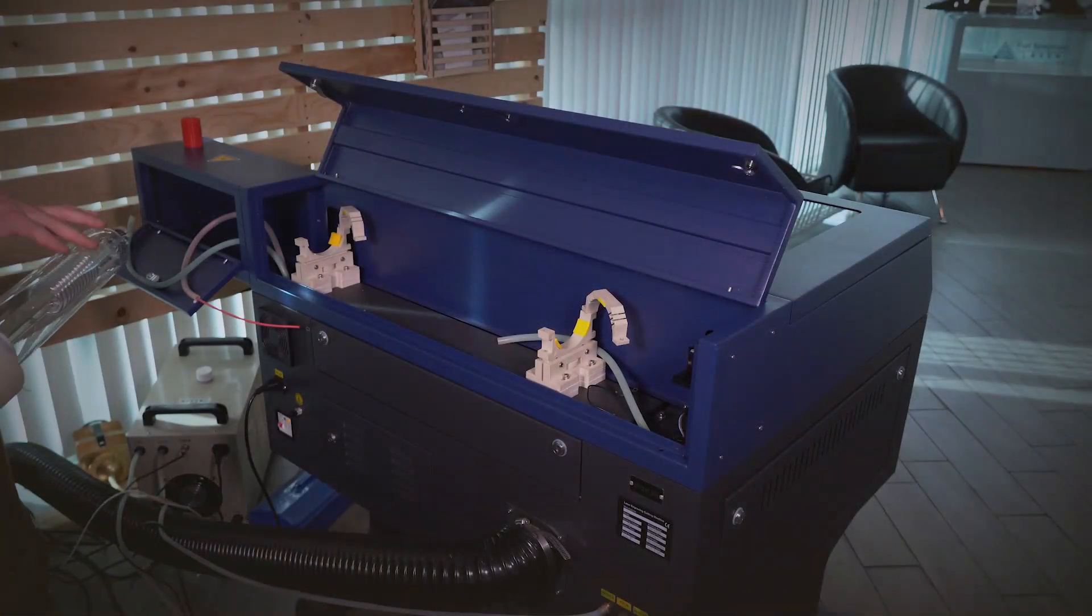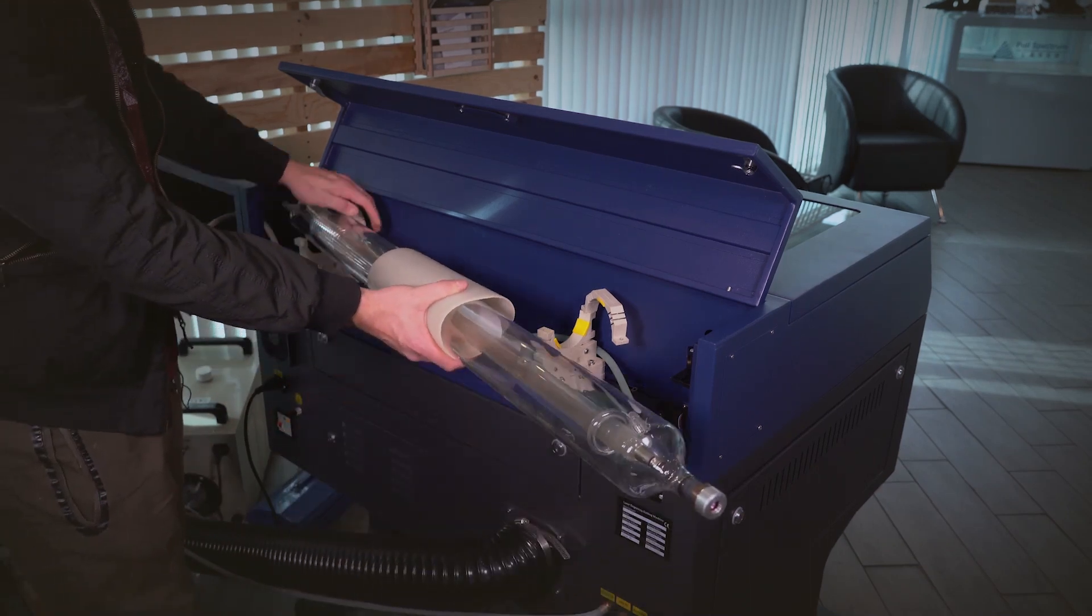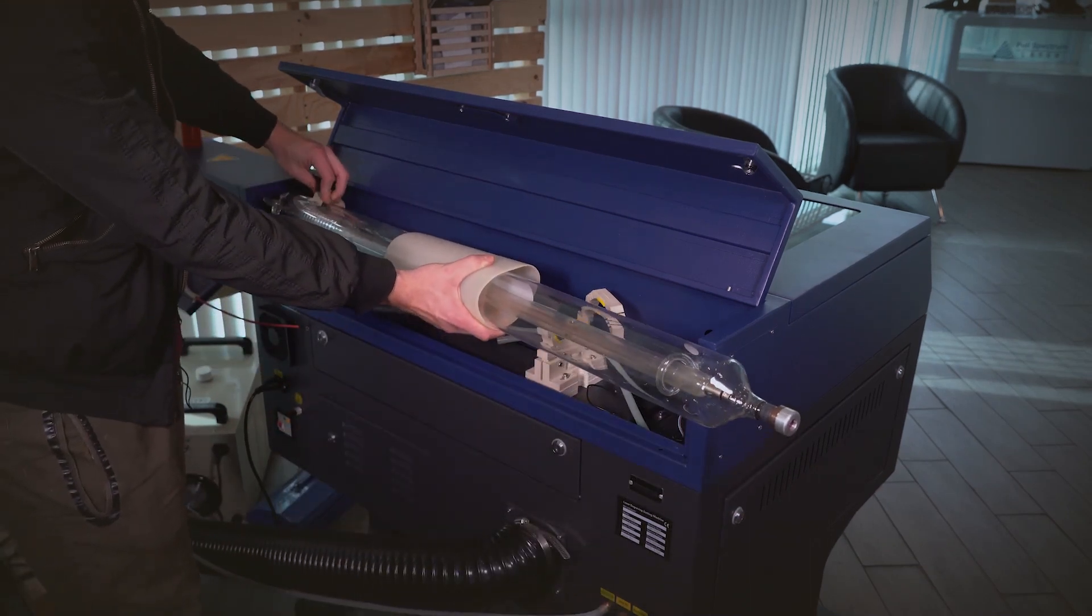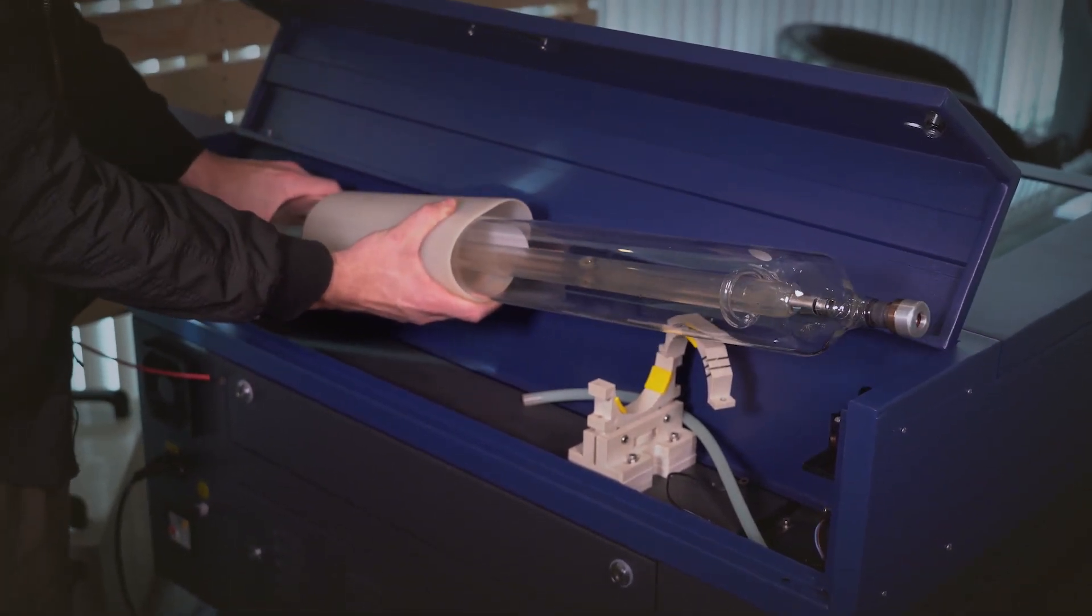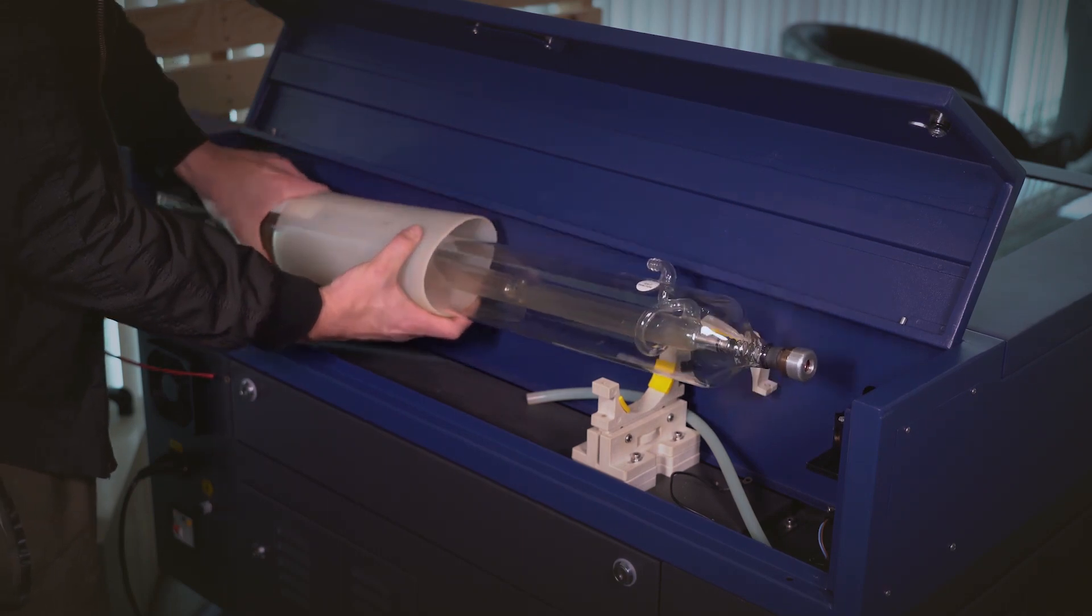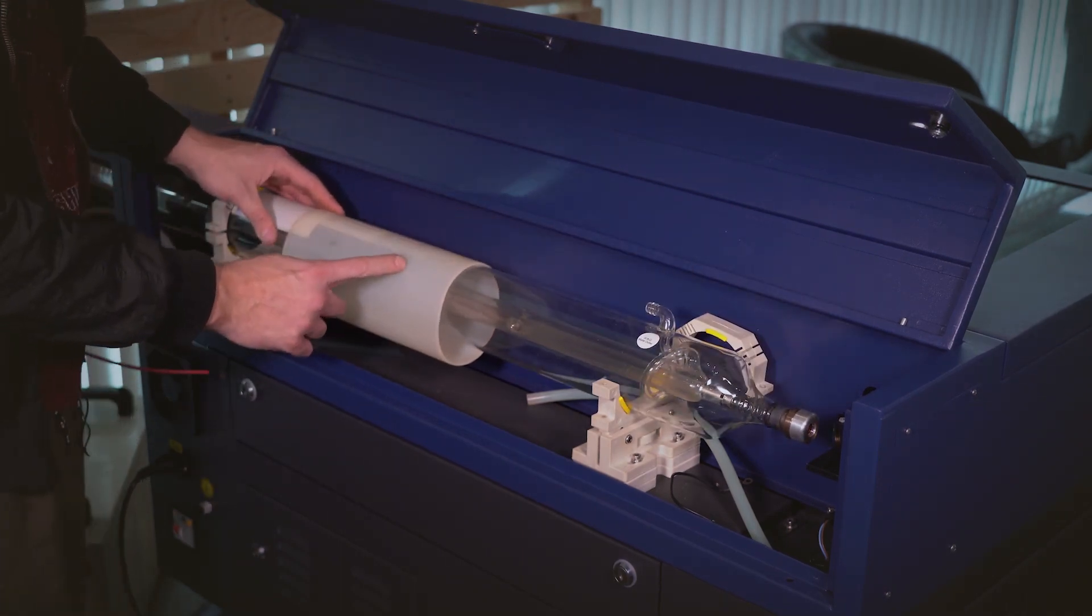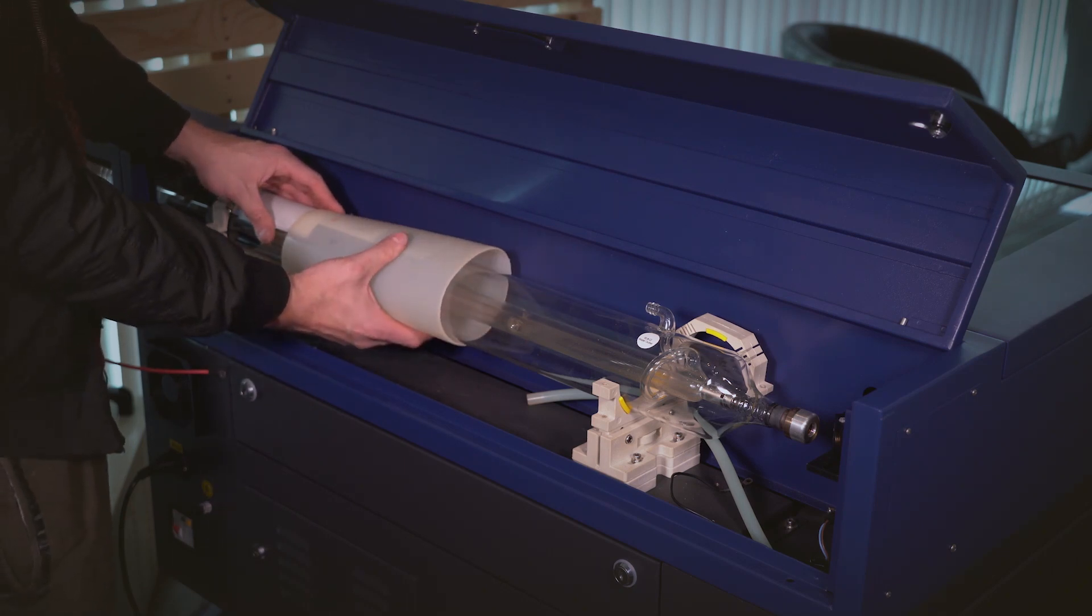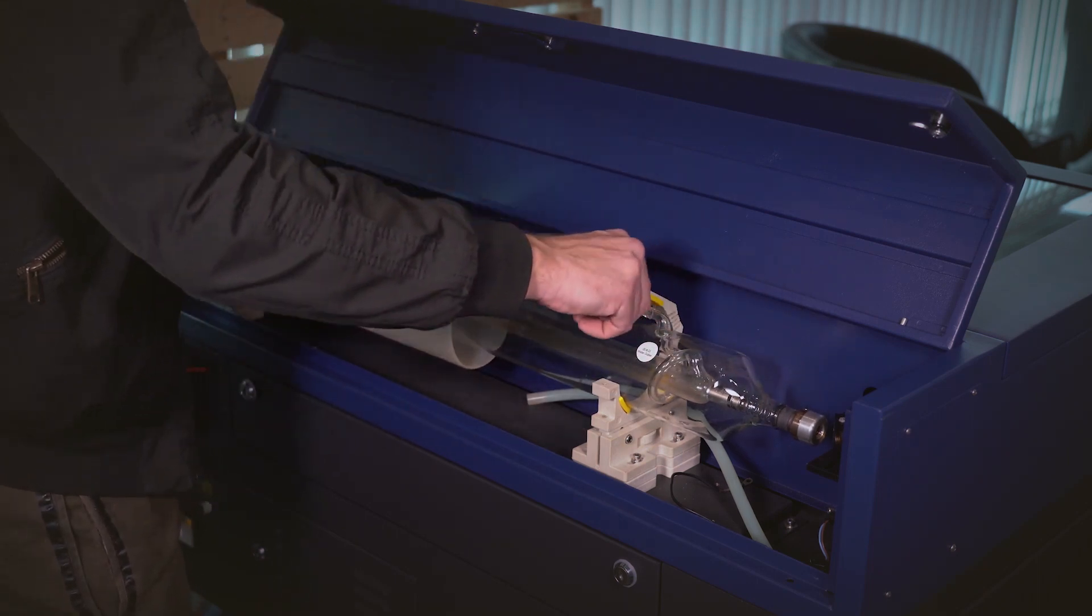Now it's time to install your new laser tube by sliding it in here and setting it in the other bracket. You can use the silicone sleeve to carefully hold the tube in place as you line it up. Put the brackets back in place.